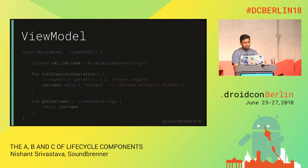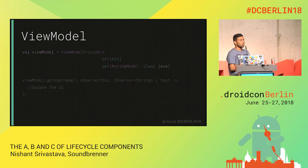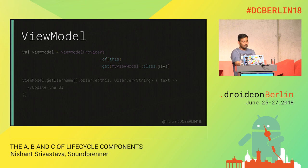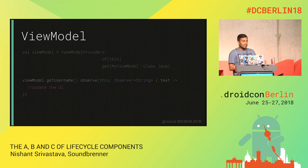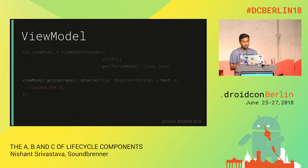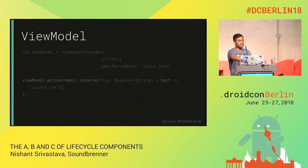When you want to reference the ViewModel back, you call ViewModelProvider, get the LiveData with getUsername, and observe on that data. The ViewModel persists through configuration changes. The observer is still subscribing and unsubscribing on its own, so everything happens automatically. Once I've put this code in my activity or fragment, everything else is being handled in the back end. That's how powerful lifecycle components are.